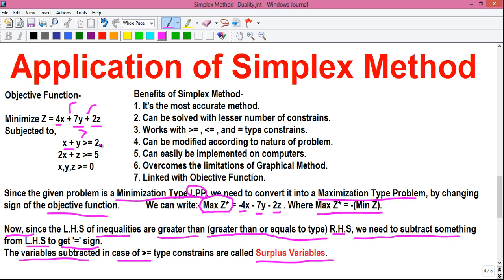we will subtract the variable P from the constraint number 1 and we will subtract the variable Q from the constraint number 2. And the variables P and Q are called the surplus variables.